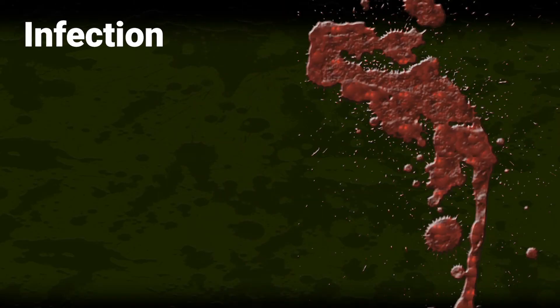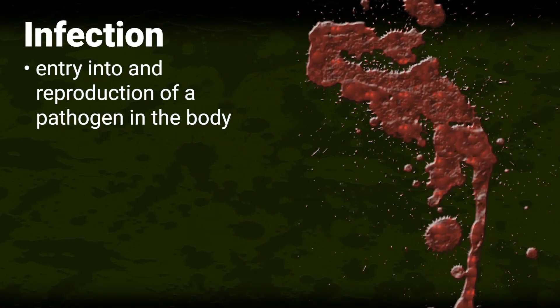Infection. Infection happens when a pathogen has entered the body and has started reproducing. For a pathogen to cause infection and disease, it must first invade a host, like the human body, gain a foothold, or get established. Then it can grow and produce disease.